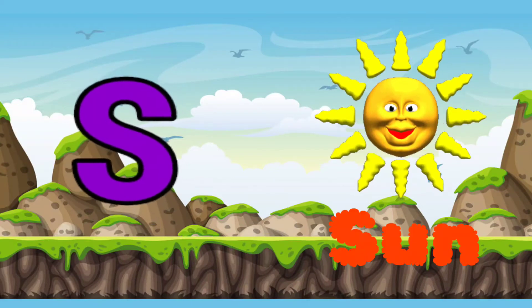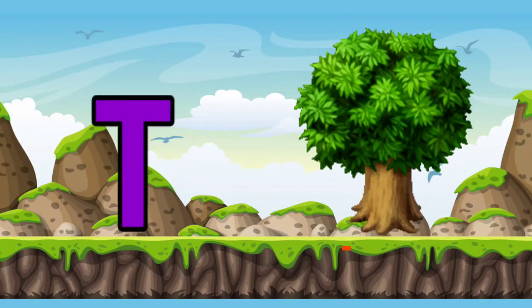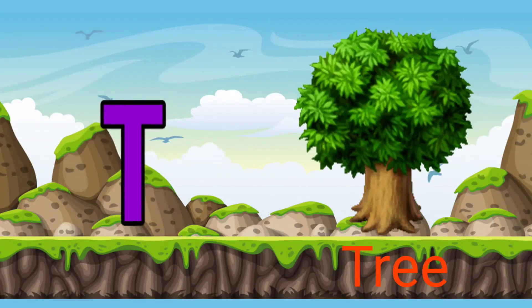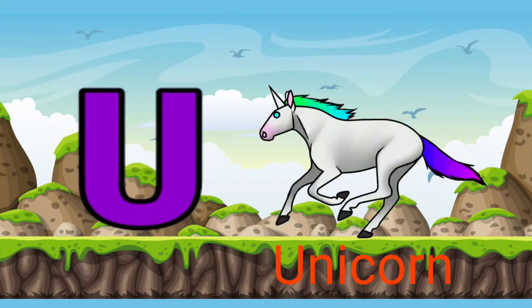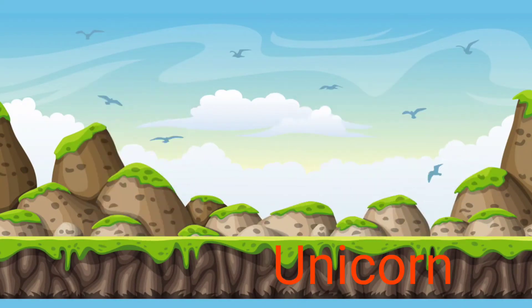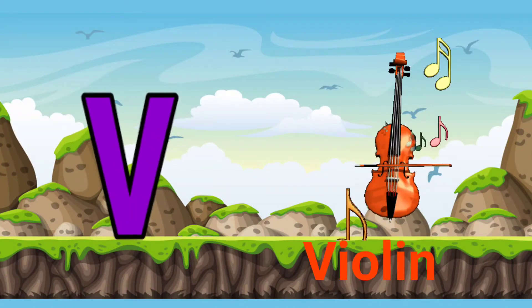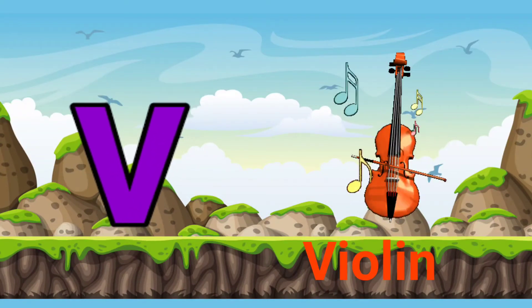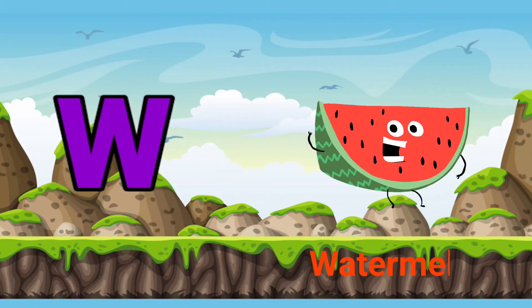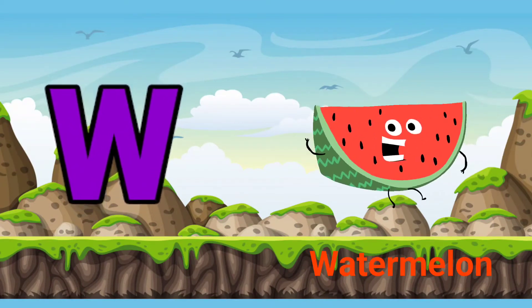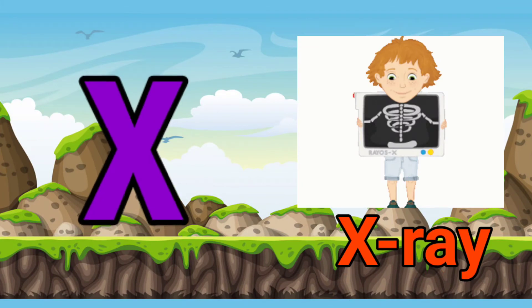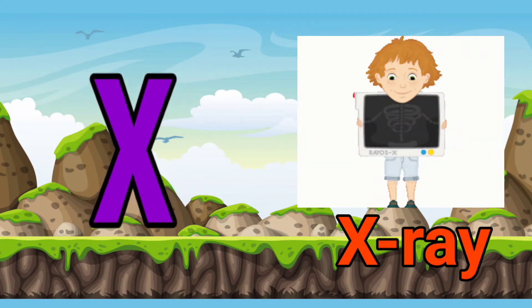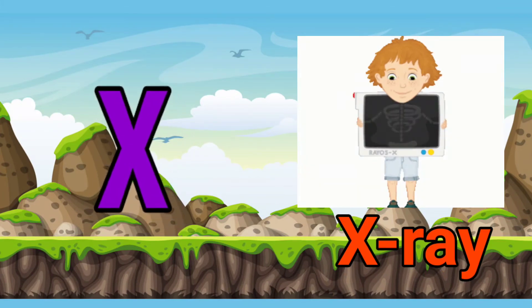S for sun, T for tree, U for unicorn, V for violin, W for watermelon, X for x-ray.